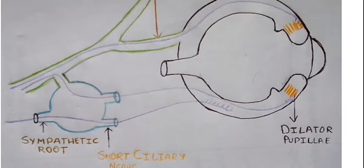They can also travel through the sensory root of the ciliary ganglion, through the ganglion, to the short ciliary nerves.